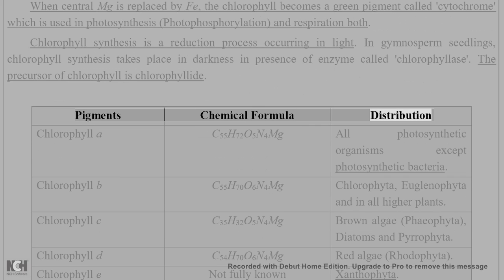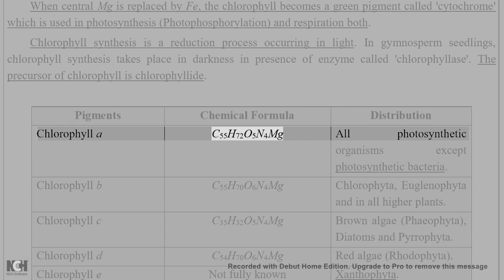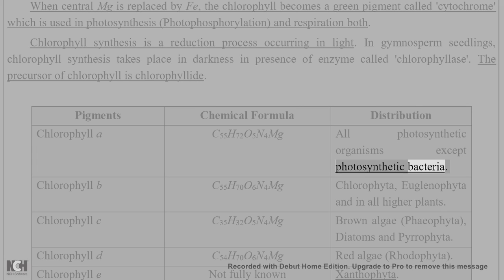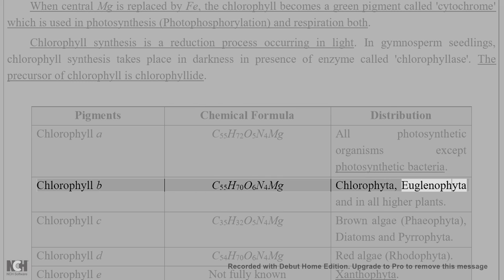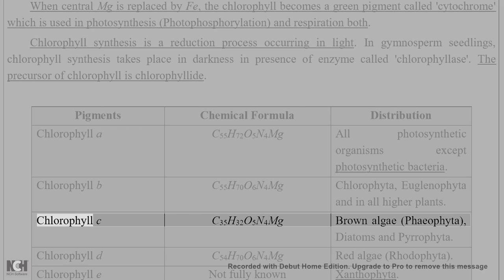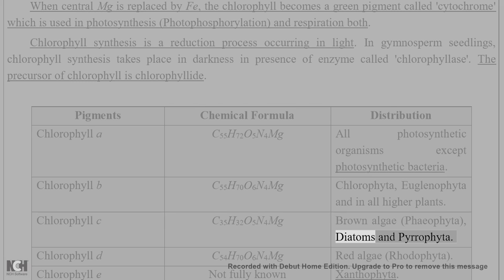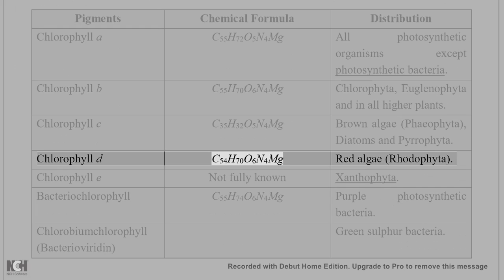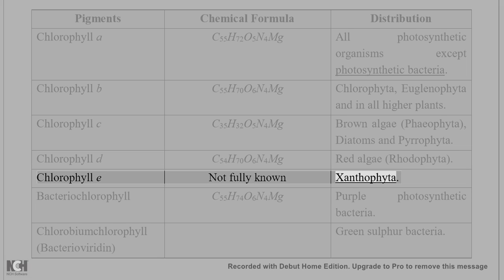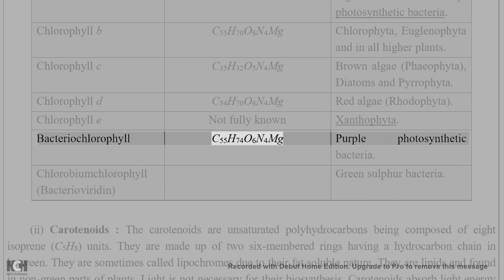The chemical formulas and distribution of chlorophylls are as follows: Chlorophyll a — C55H72O5N4Mg — found in all photosynthetic organisms except photosynthetic bacteria. Chlorophyll b — C55H70O6N4Mg — found in Chlorophyta, Euglenophyta, and all higher plants. Chlorophyll c — C35H32O5N4Mg — found in brown algae (Phaeophyta), diatoms, and Pyrrophyta. Chlorophyll d — C54H70O6N4Mg — found in red algae (Rhodophyta). Chlorophyll e — not fully known, found in Xanthophyta. Bacteriochlorophyll — C55H74O6N4Mg — found in purple photosynthetic bacteria.